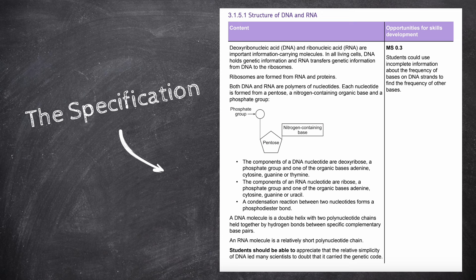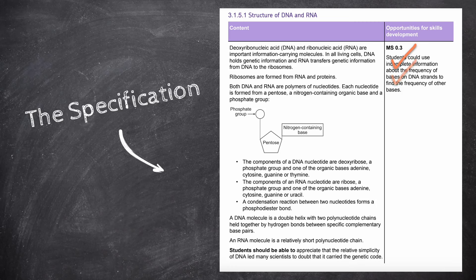Great, that would be the structure of DNA and RNA covered. We know that DNA and RNA are important information-carrying molecules, and that, in all living cells, DNA holds genetic information and RNA transfers genetic information from DNA to ribosomes. We also know that ribosomes are formed from RNA and proteins. Then we have learned that DNA and RNA are polymers of nucleotides, and we have covered the structure of a single nucleotide. We know the final structure of a DNA double helix, and that an RNA molecule is a relatively short polynucleotide chain. We have also covered a little history about the discovery of DNA as the carrier of the genetic code, knowing that, at first, the relative simplicity of DNA led many scientists to doubt that it carried the genetic code.